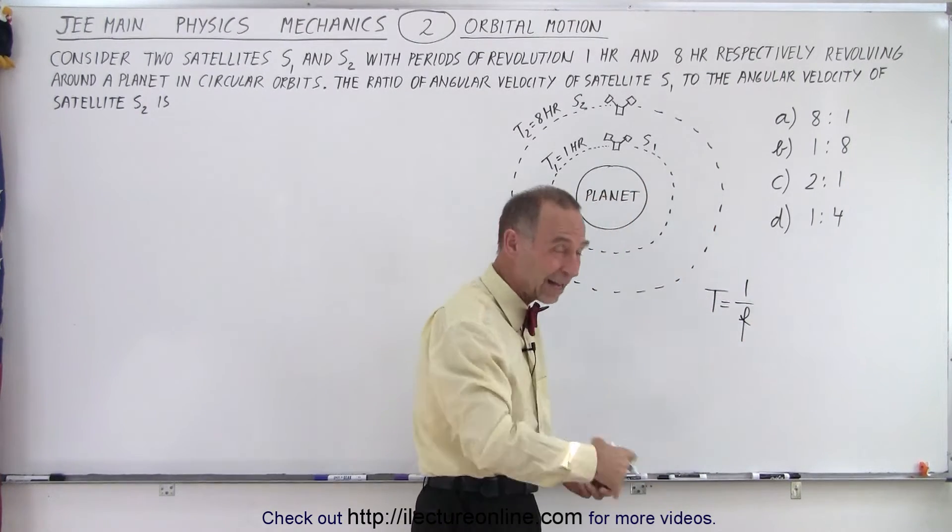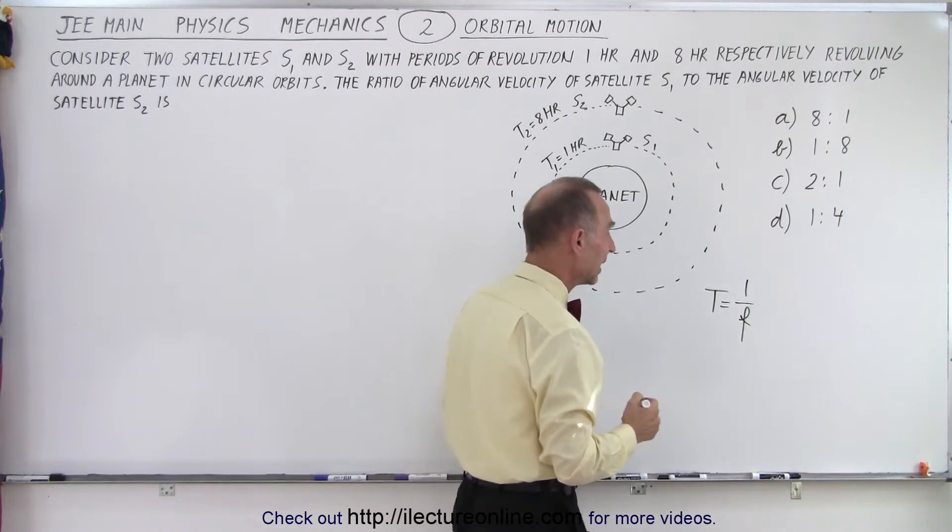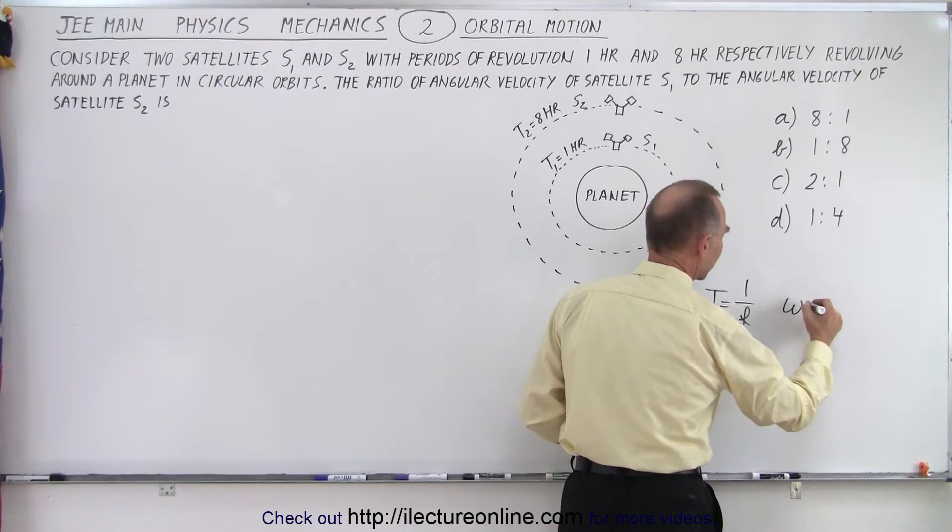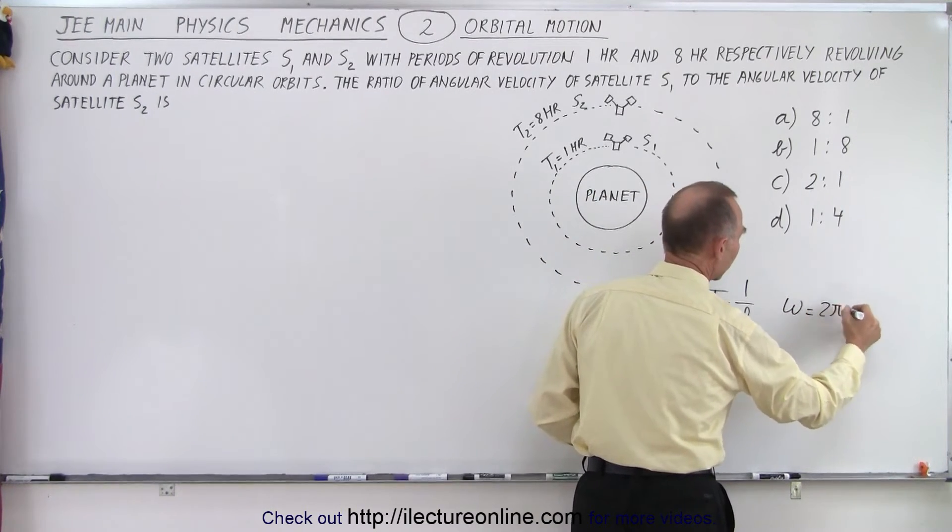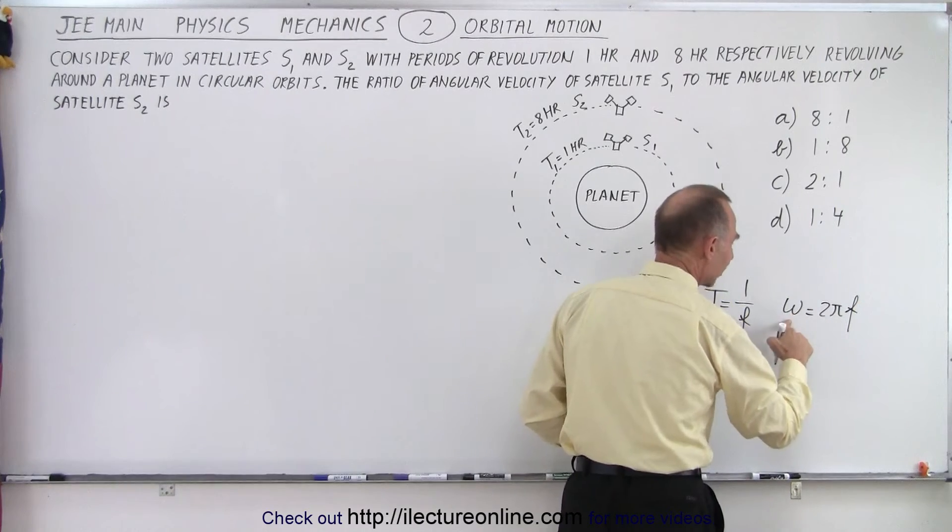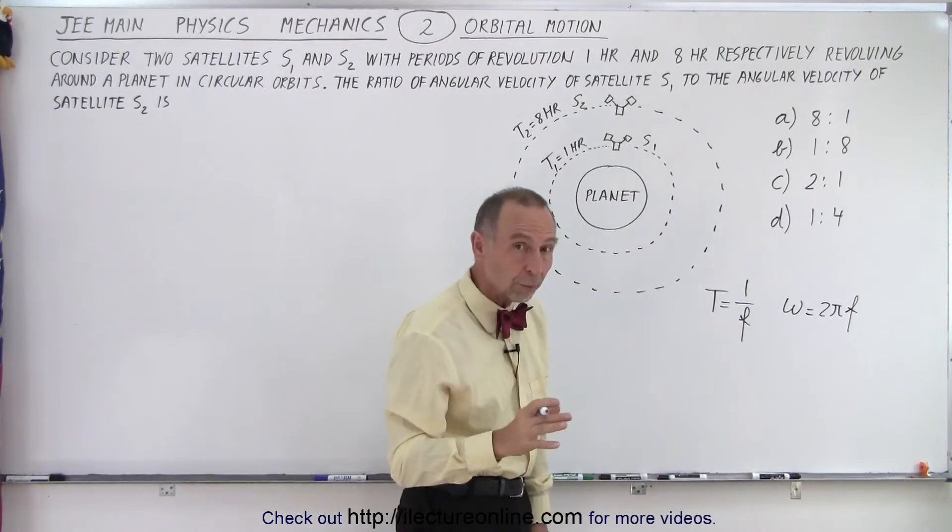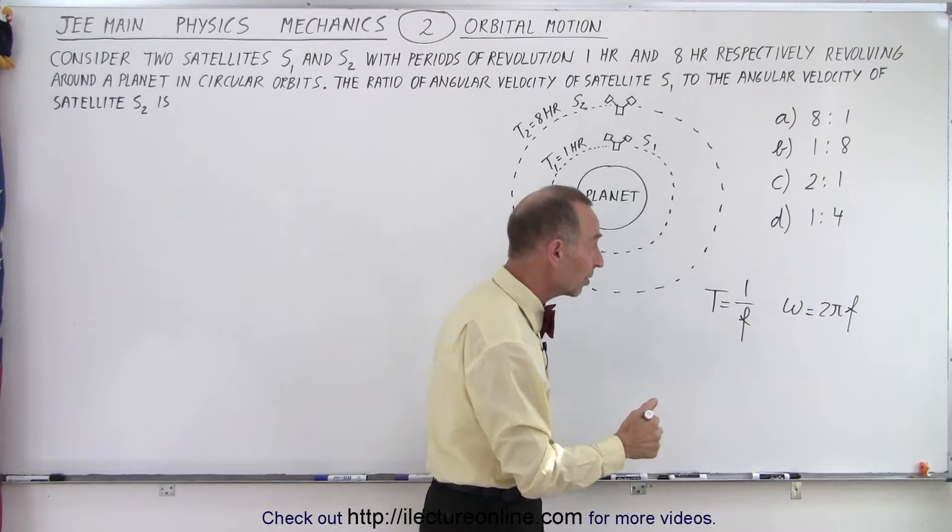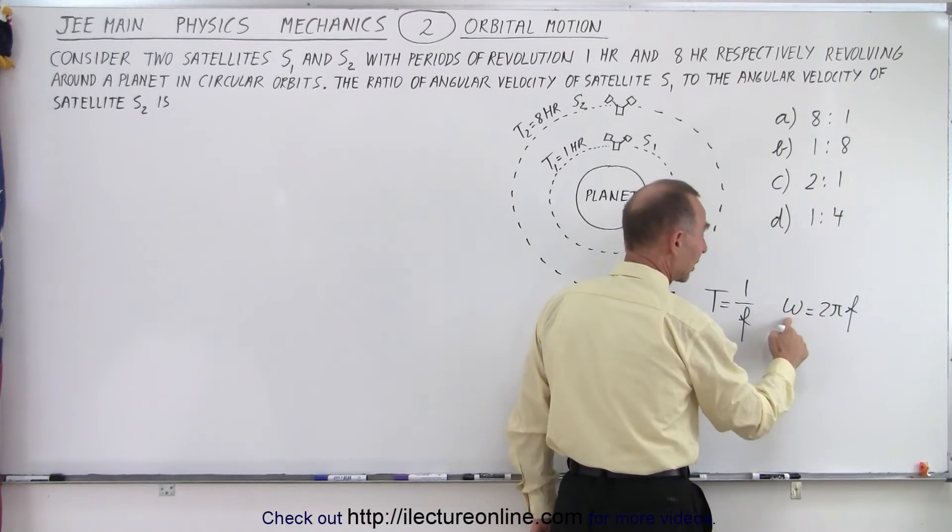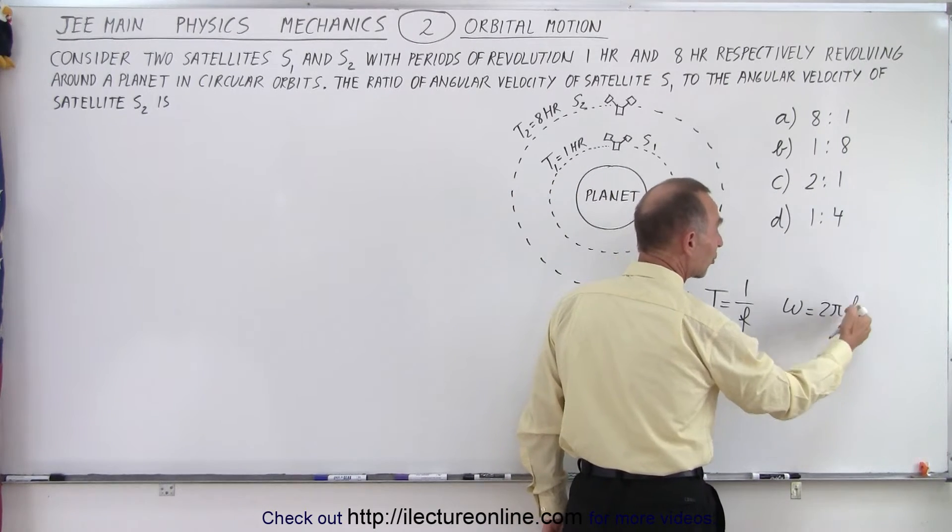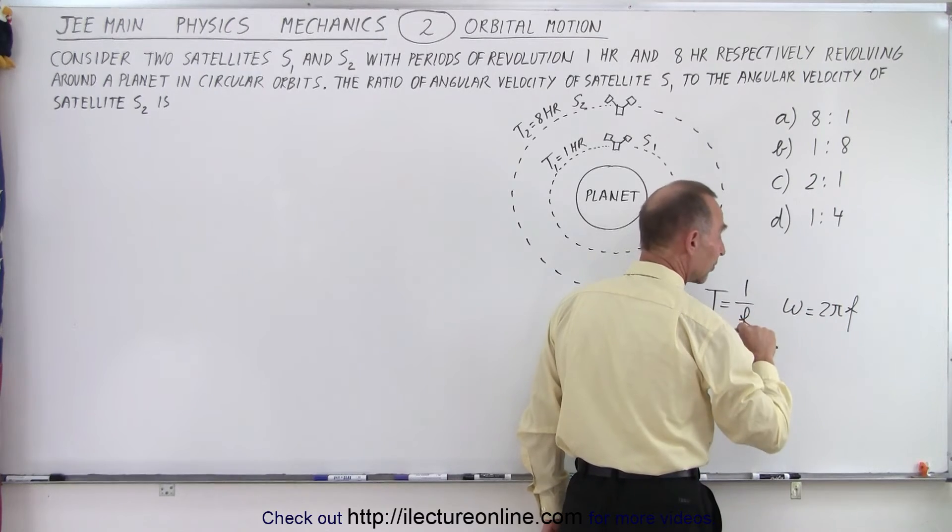And then we also know that omega is equal to 2 pi f. Now omega is the angular frequency, but it's also proportional to the angular velocity. So here angular frequency would be 2 pi times the number of times that would go around per second.